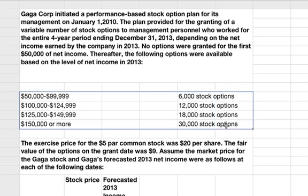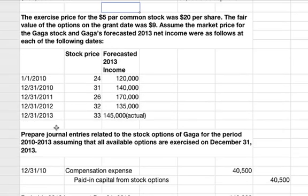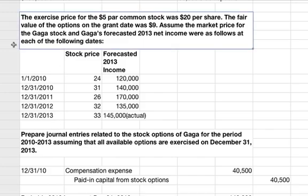If they hit these levels of net income, then this is the amount of stock options that were granted. The exercise price for the $5 par common stock was $20 per share. The fair value of the options on the grant date was $9. Assume the market price for Gaga stock and Gaga's forecasted 2013 net income were as follows at each of the following dates.